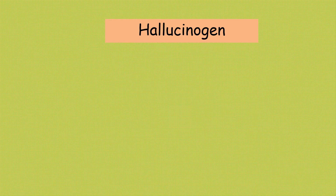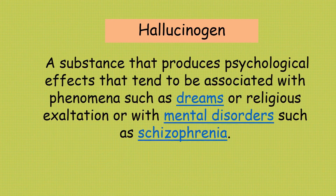First, let's talk about hallucinogens. A hallucinogen is a substance that produces psychological effects that tend to be associated with phenomena such as dreams or religious exaltation, or with mental disorders such as schizophrenia. Hallucinogens produce changes in perception, thought, and feeling, ranging from distortions of what is sensed or illusions, to sensing objects where none exist — the hallucinations.